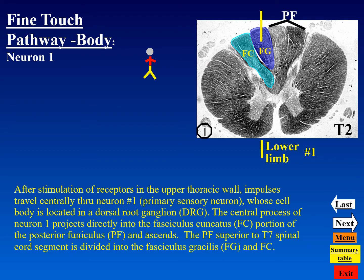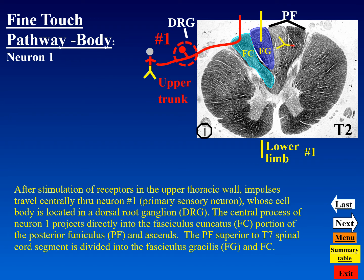Now we get fine touch information from the upper trunk at the T2 level of the thoracic spinal cord. The neuron one cell body is in the dorsal root ganglion, and the central process enters through the dorsal root into the posterior funiculus. At this point the posterior funiculus is divided into two parts: the fasciculus gracilis and cuneatus. This process from the upper trunk becomes part of the fasciculus cuneatus. Somatotopically, the lower limb is most medially represented, then the lower trunk, and now the upper trunk.